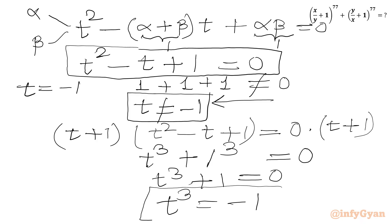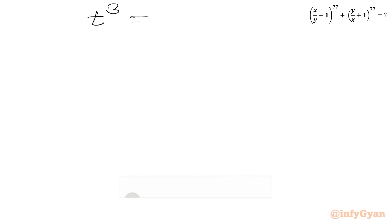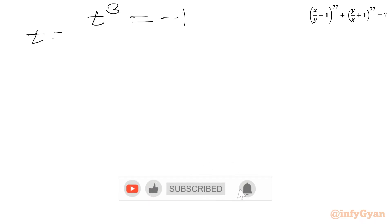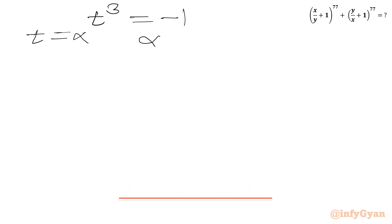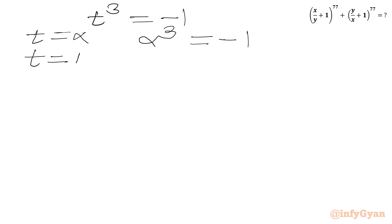Now we put t = alpha and t = beta, where t cannot equal -1. Substituting t = alpha into t³ = -1, we get alpha³ = -1. And substituting t = beta, we get beta³ = -1. These are two important results.